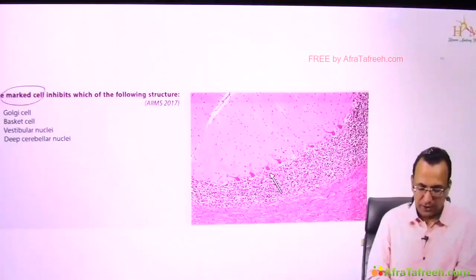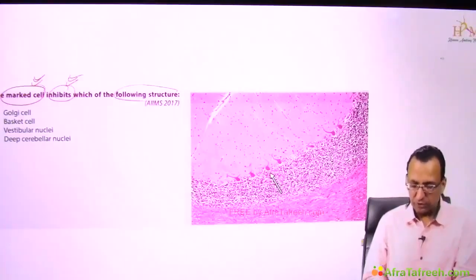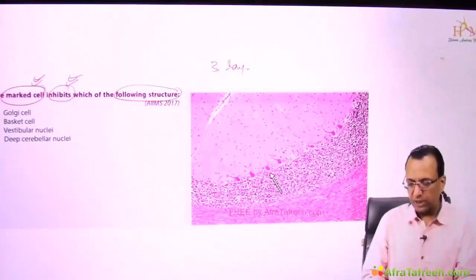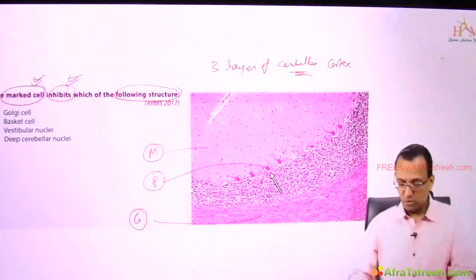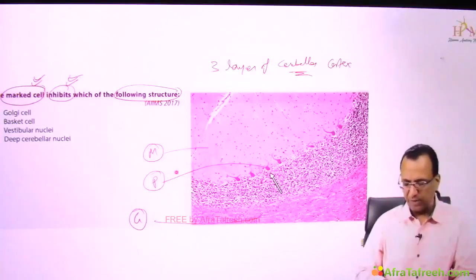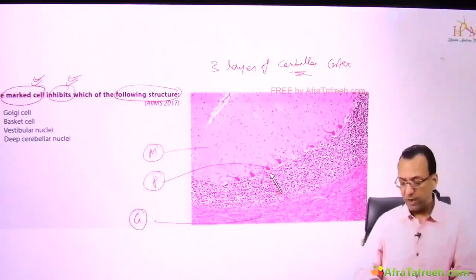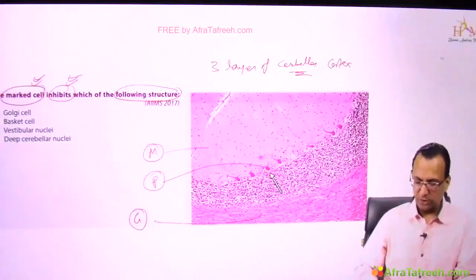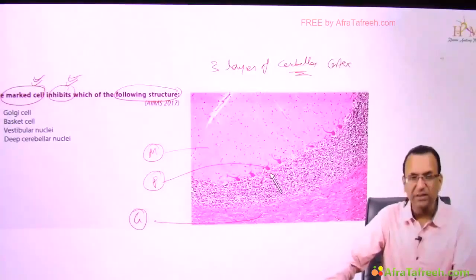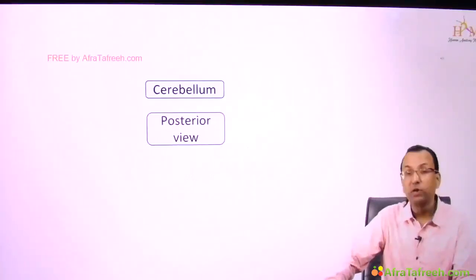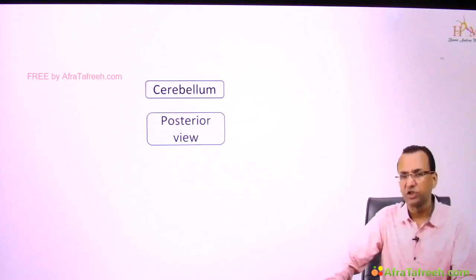A question asks which structure the marked cell (Purkinje cell) inhibits. The three layers of the cerebellar cortex are: outer molecular layer, middle Purkinje layer, and inner granular layer. There are five cells across these layers. The Purkinje cell can be identified as a flask-shaped cell with multiple dendritic processes. By practicing microscopy slides, you can learn to identify it.